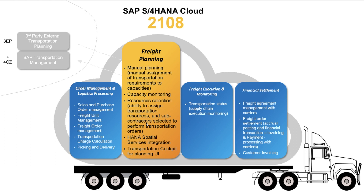You also have the ability to assign the carrier — the subcontractor to whom you will entrust the transportation of the freight order. There is also a prerequisite to set up integration to the HANA Spatial Services that reside on the Business Technology Platform. These spatial services translate a physical postal address into geo coordinates — a latitude and longitude — and allow accurate scheduling by calculating the distance between source and destination locations. All of this happens in a new transportation cockpit purposely made to help you achieve the best results in planning your freight units to your freight orders.